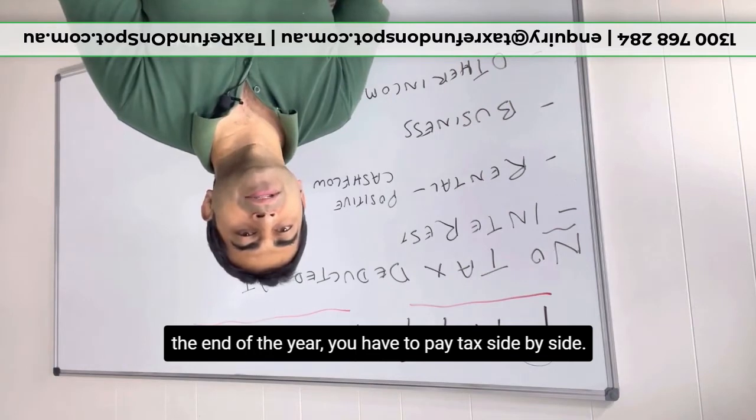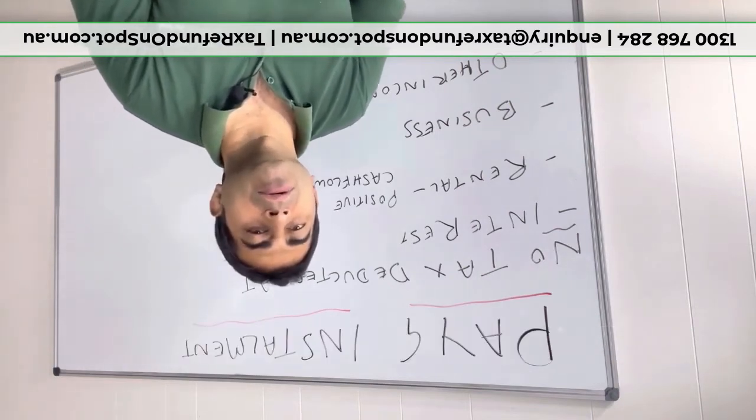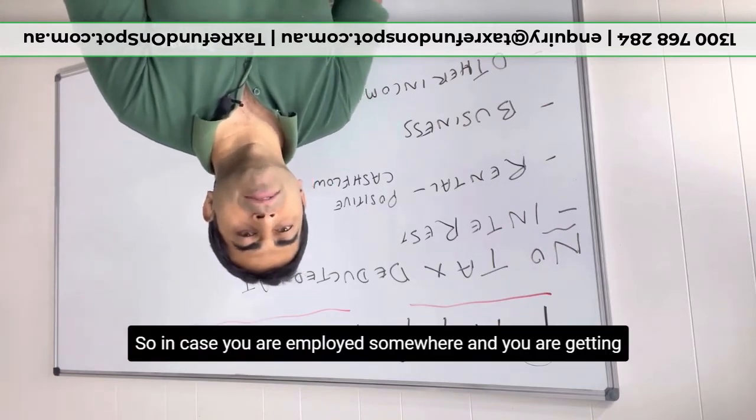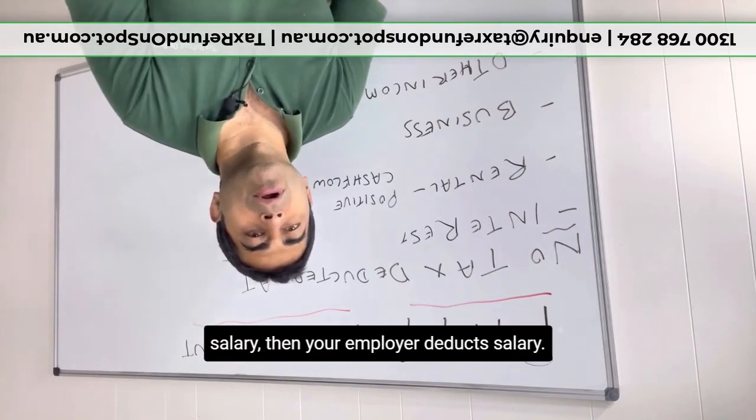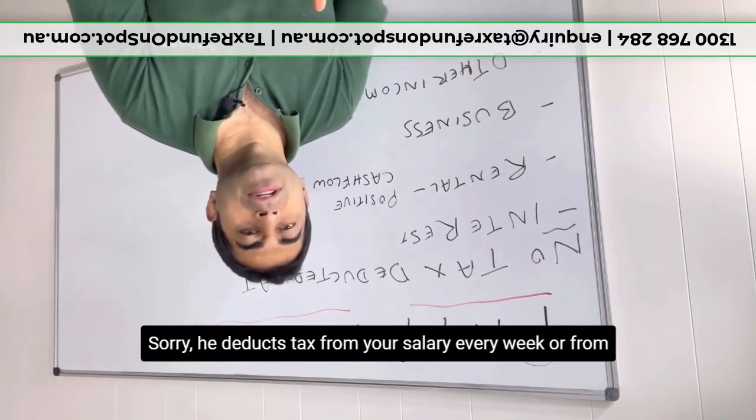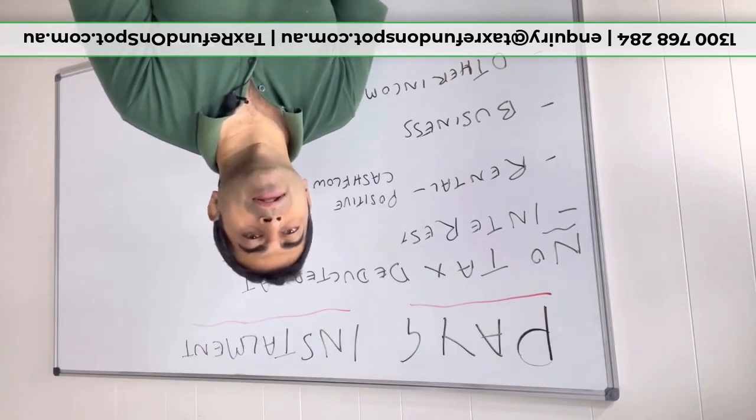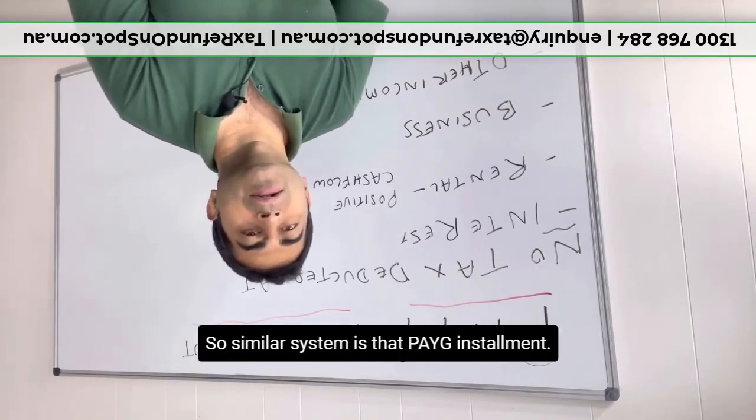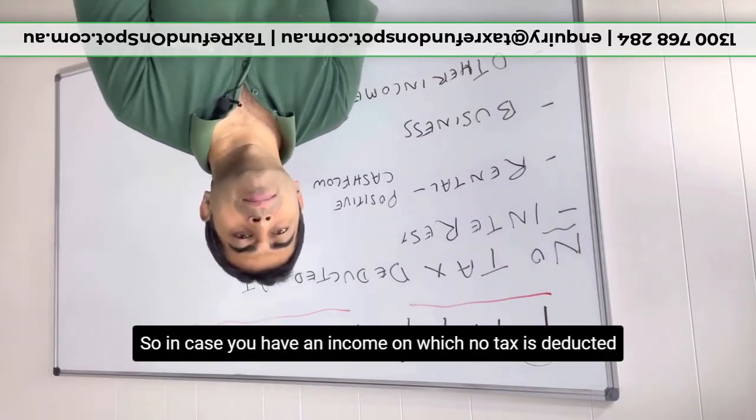This similar PAYG system is in the salary system also. So in case you are employed somewhere and you are getting salary, then your employer deducts tax from your salary every week or from every payment. Similar system is that PAYG installment. So in case you have an income on which no tax is deducted at source, then you have to pay that tax every three months.